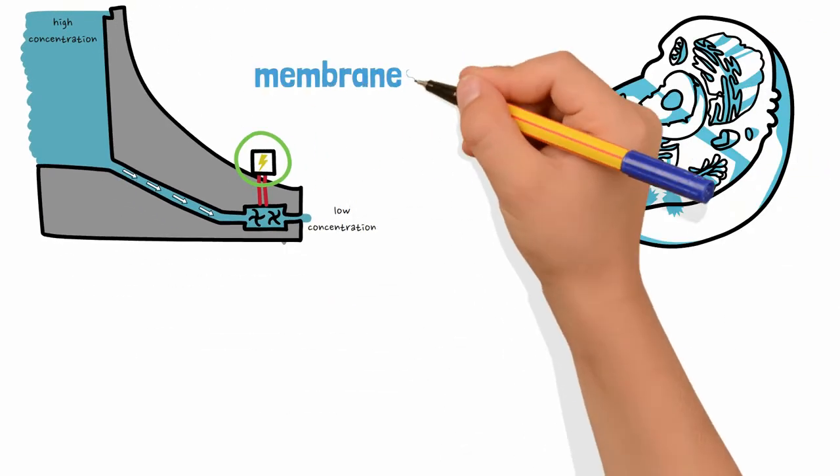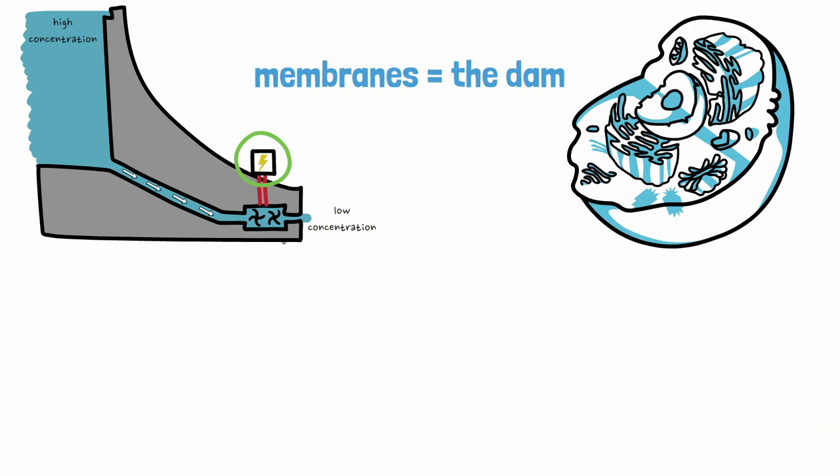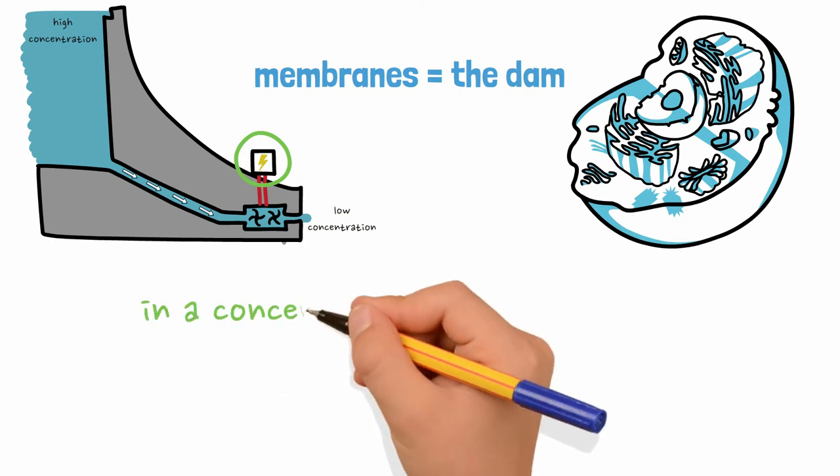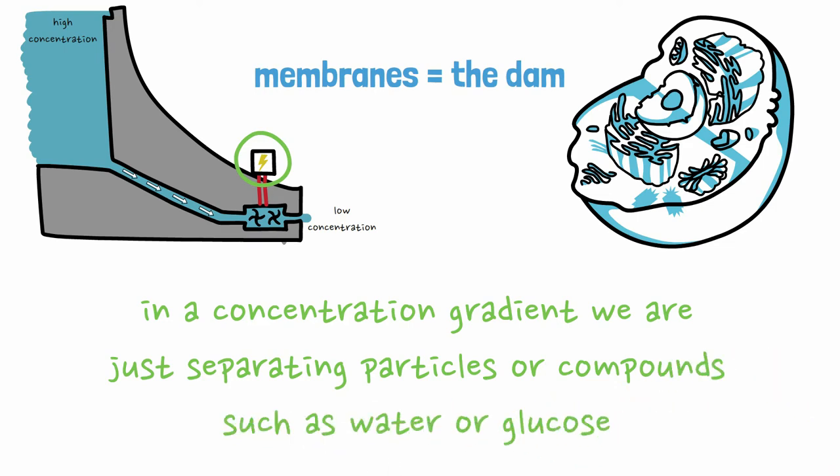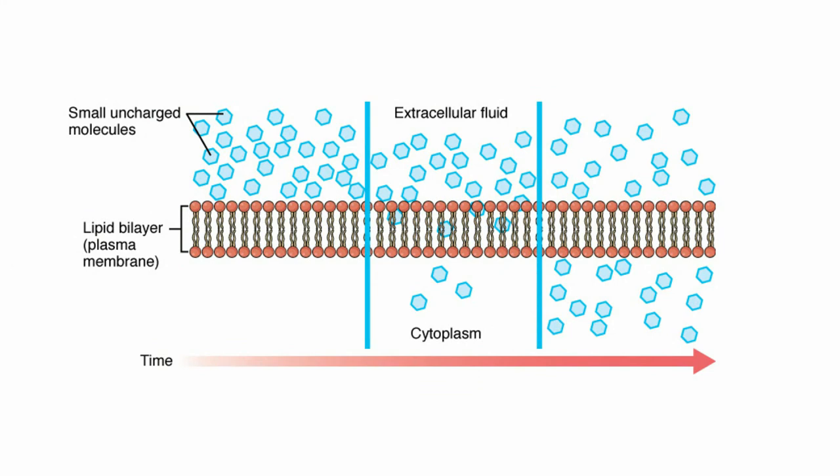In biology, the membranes are like the dam, keeping particles separated. In a concentration gradient, we're just separating particles or compounds such as water or glucose. One general example of this is diffusion. Small, uncharged particles flow across a cellular membrane to make sure both sides are balanced.